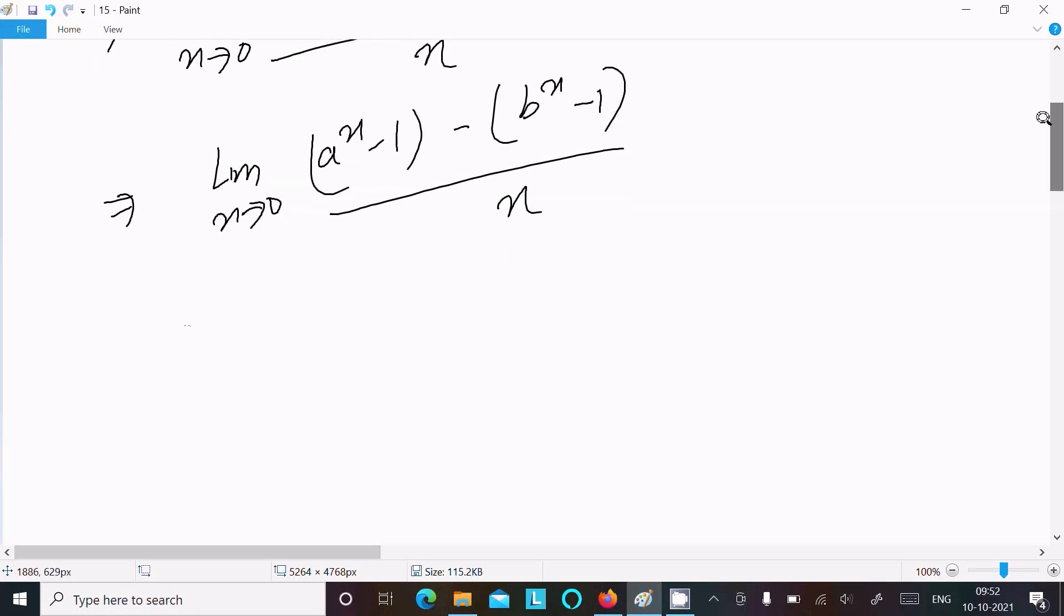Now after that, writing here limit x tend to 0, let's make the relationship with a power x minus 1 divided by x. There minus b power x minus 1 divided by x.